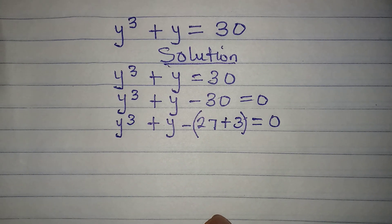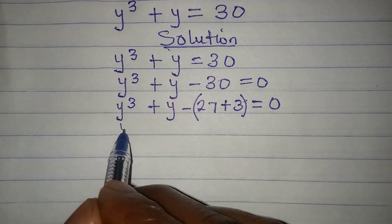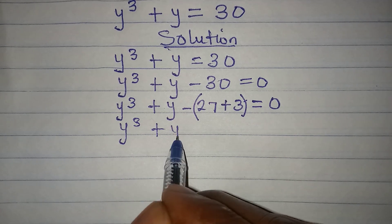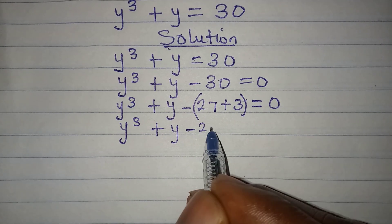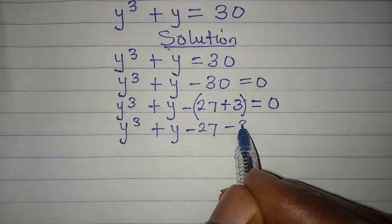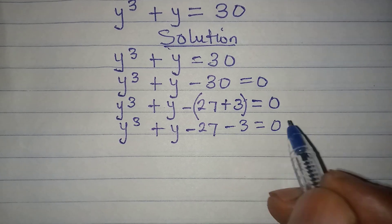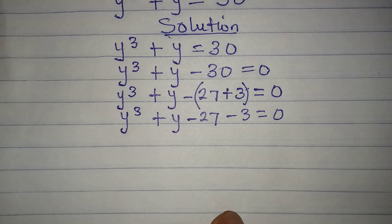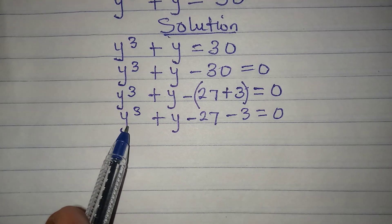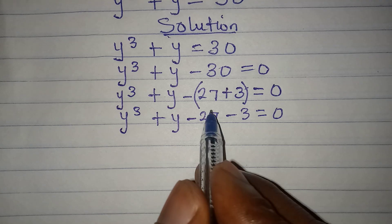Now open that bracket so that you will have y to the power of 3 plus y minus 27 minus 3 equals zero. Remember that we are having y to the power of 3 here.